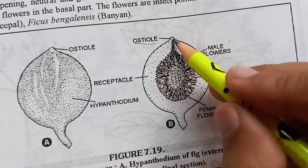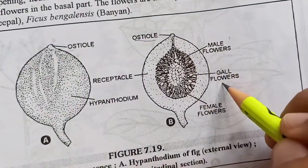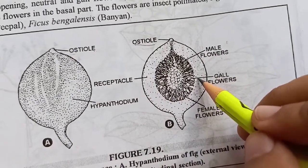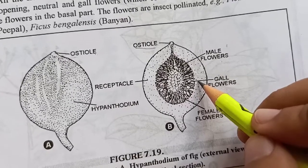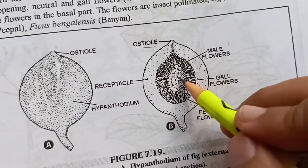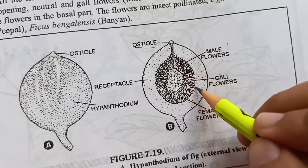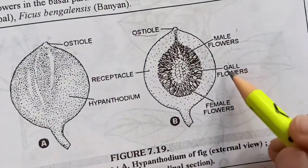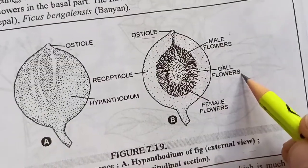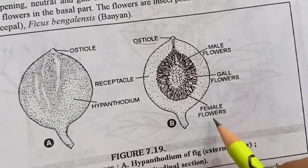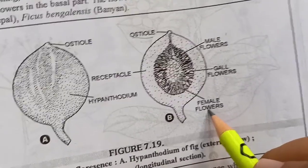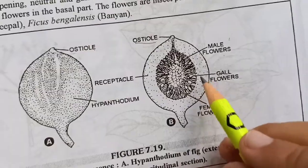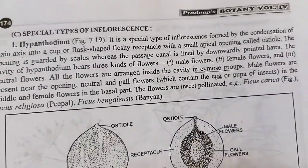Male flowers are present near to the osteol. Gall flowers or neutral flowers are present in the middle, and they contain the egg or pupa of insects. Aur sabse neeche wale flowers hote hain female flowers, which are present at the base of the cavity. Toh teen tariqe se is tariqe se flowers present hoti hain.